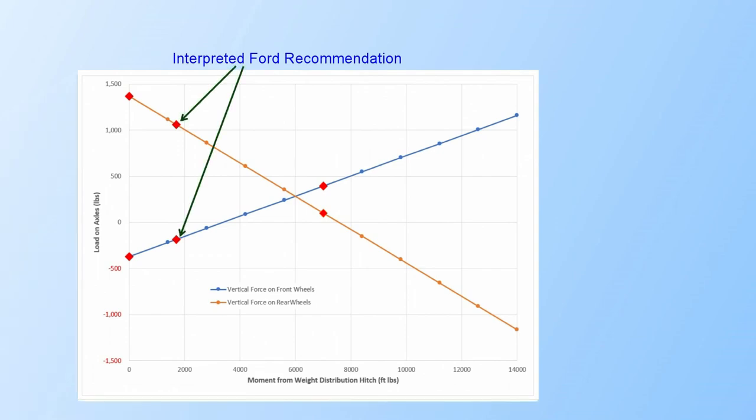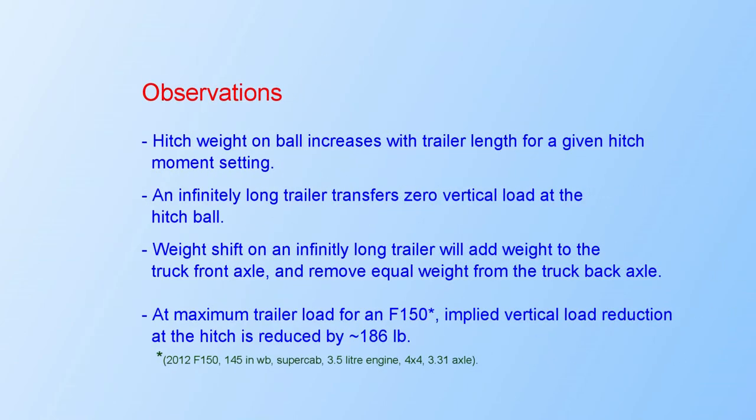There are some unexpected or at least to me unexpected observations. Hitch ball vertical weight is dependent on the trailer length for a given moment setting. An infinitely long trailer would transfer zero vertical load at the trailer hitch, but would shift an equal and opposite load from the rear to front truck axle.